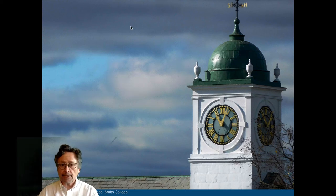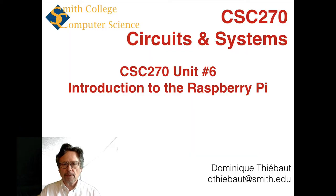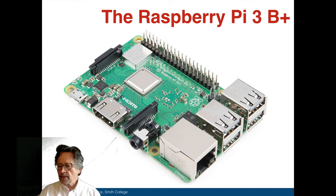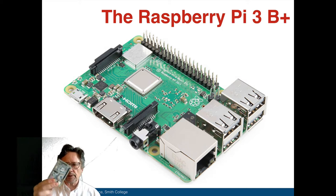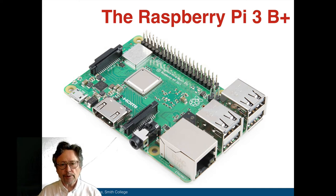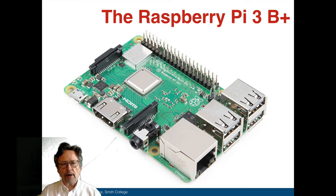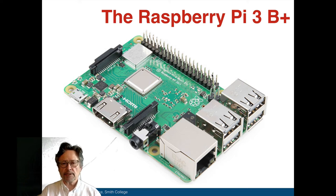We are starting unit 6 on the Raspberry Pi after finishing several units on the Arduino. The Raspberry Pi, you should all have one that looks similar to this in a little plastic case. It has a processor, several ports: HDMI for video, mini USB for power, a connector for a camera, USB, Ethernet, and a group of pins for LEDs and switches. This is called a GPIO, and we'll talk about that very soon.